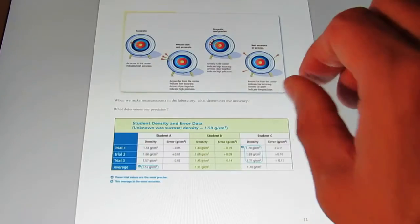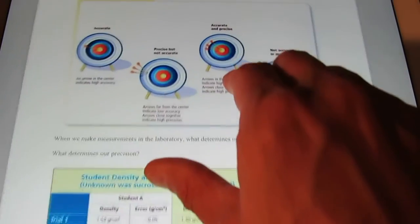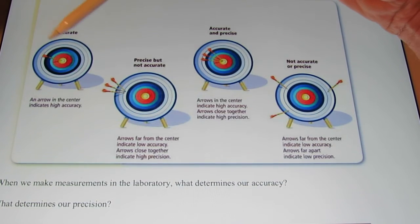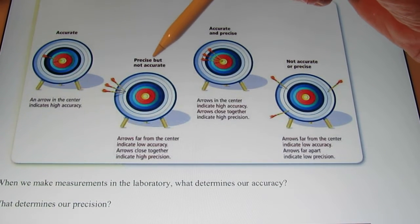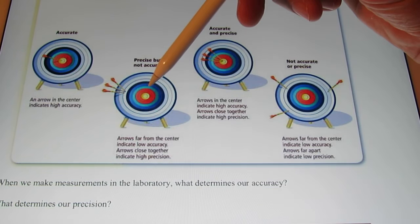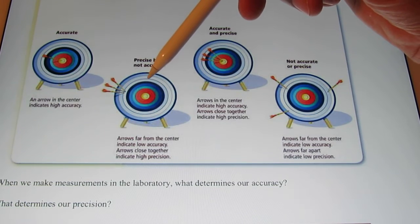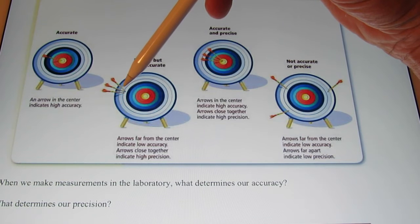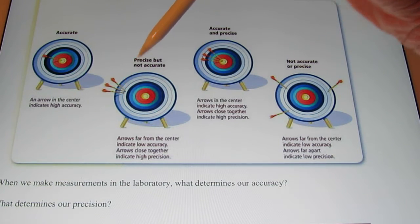So let me give you an example using a target and some arrows. So let's say an arrow hitting the center of a target is accurate. Of course, that means it's accurate. It's a bullseye, right? All right, let's say we shoot three arrows at the target and not one of them hit the bullseye. Obviously, I have poor accuracy, but notice that my arrows are very close together. My series of measurements are very close together. So I'm precise, yet I'm not accurate.